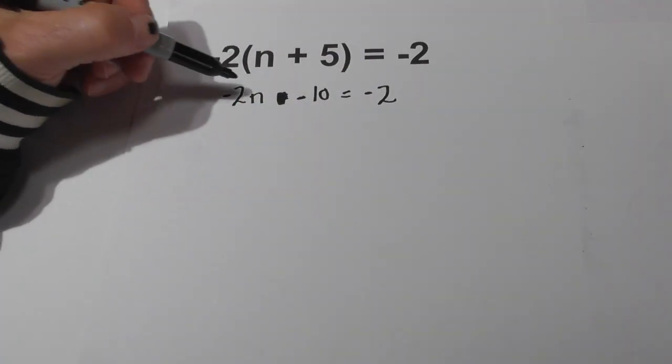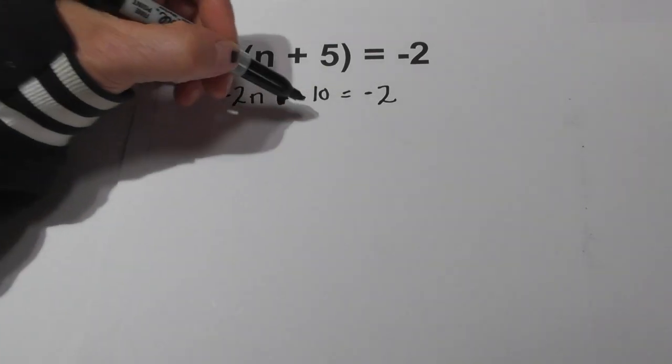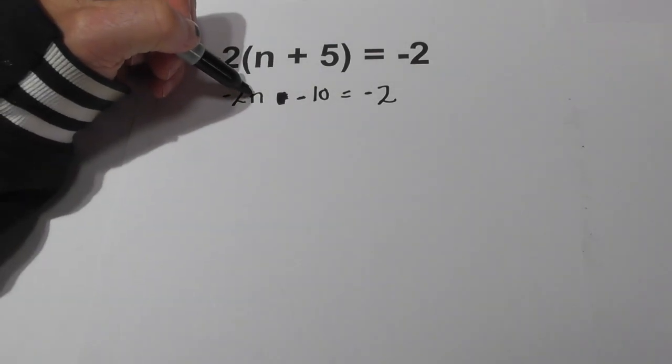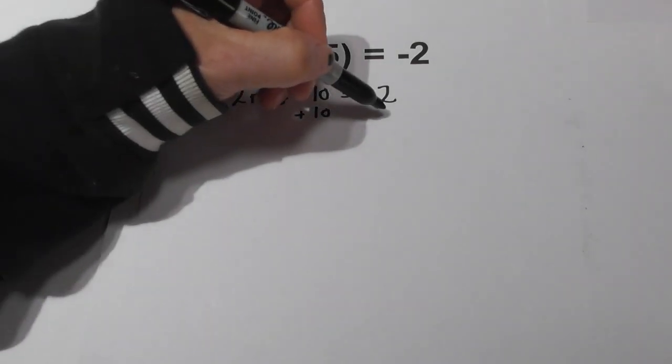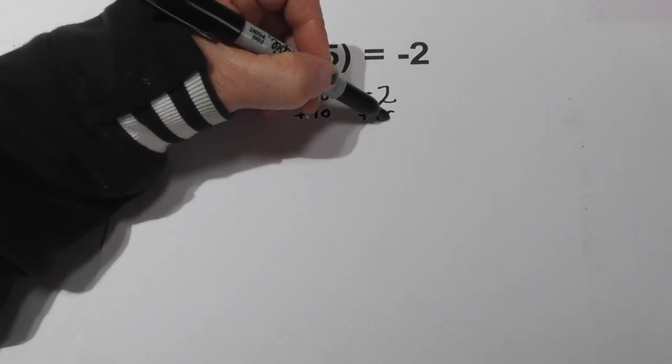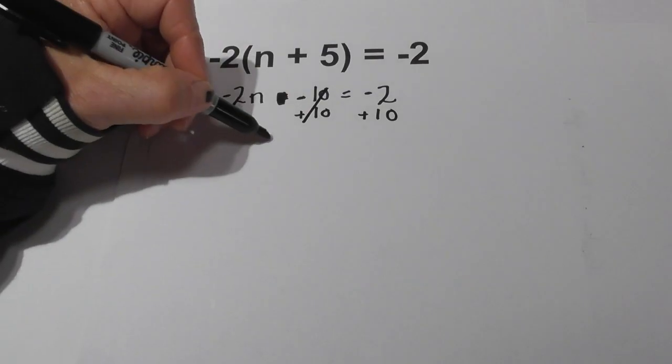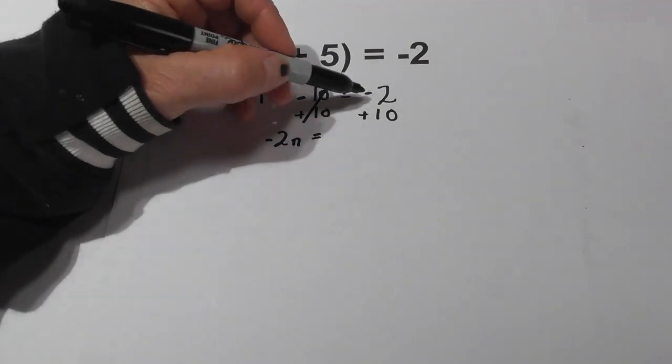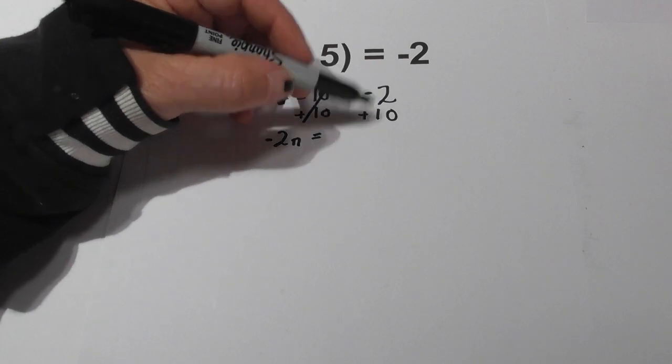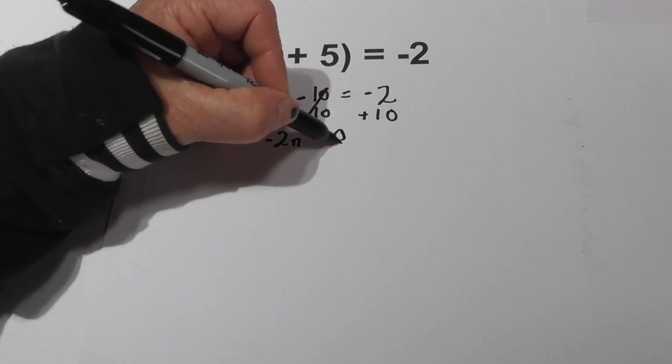Now what we need to do, we kind of have a format that we can work, is we need to try to isolate the variable which is n and we can add 10 to both sides. So now these cancel, bring down the -2n equals -2 and a positive 10 is 8.